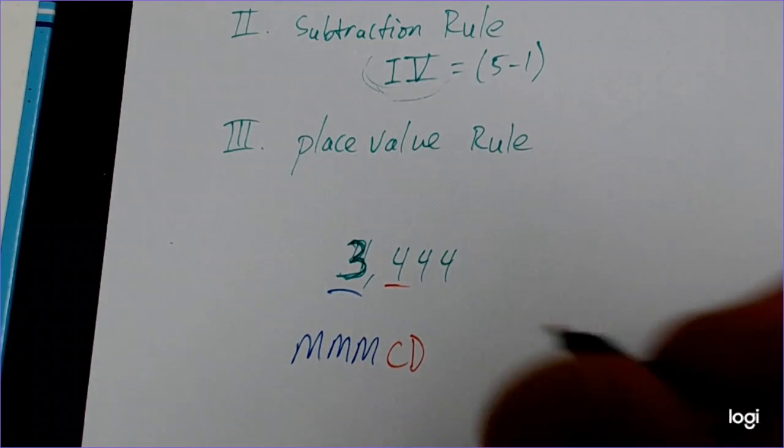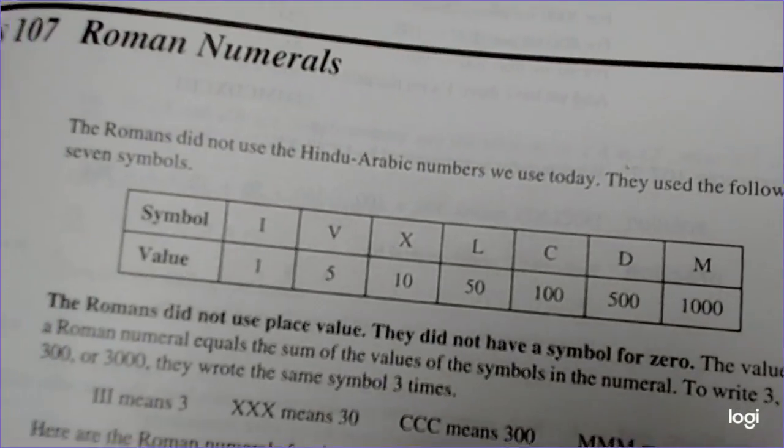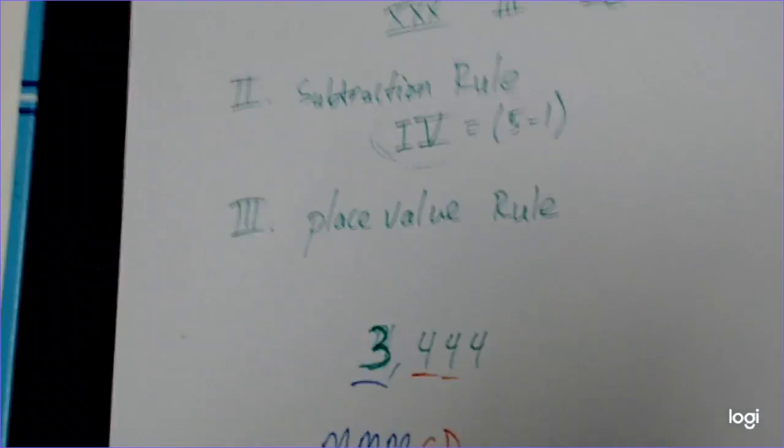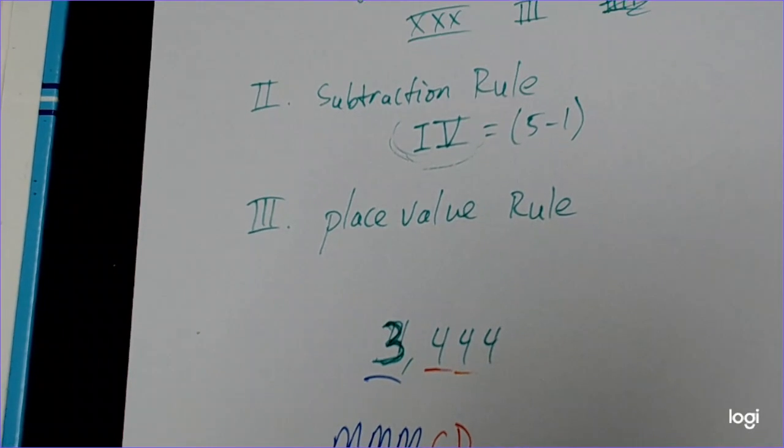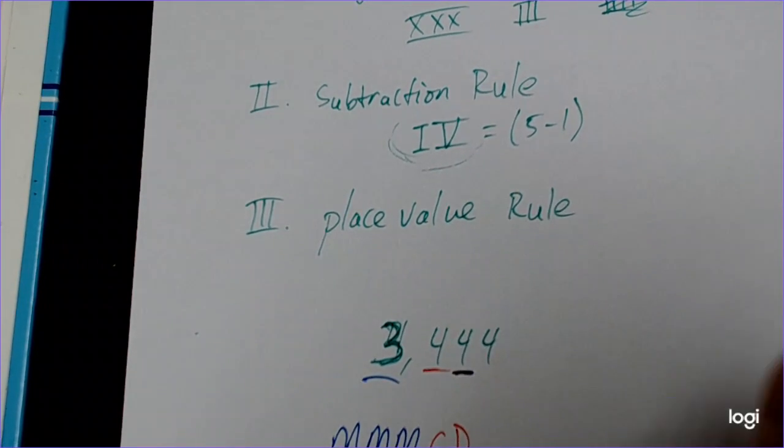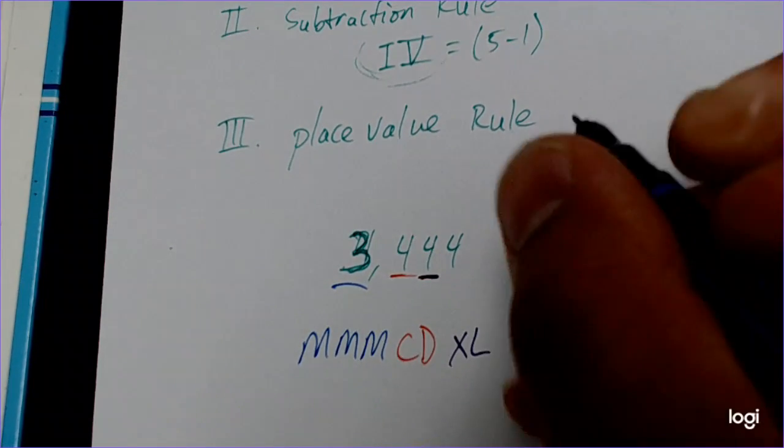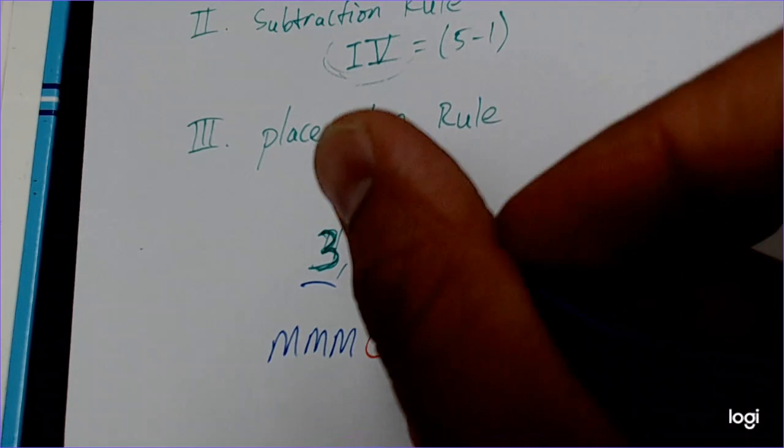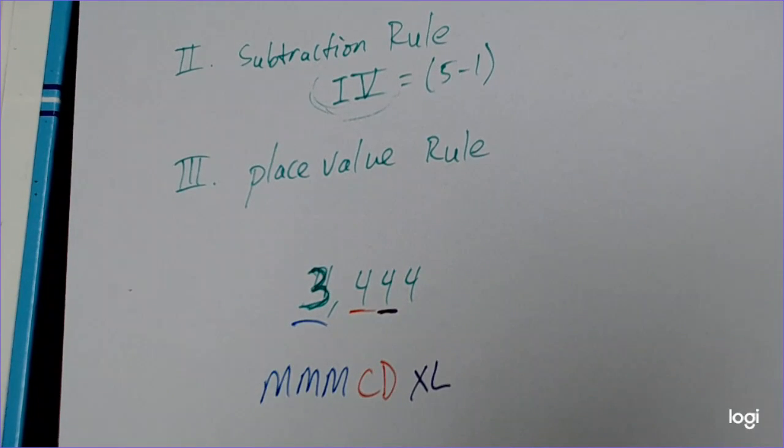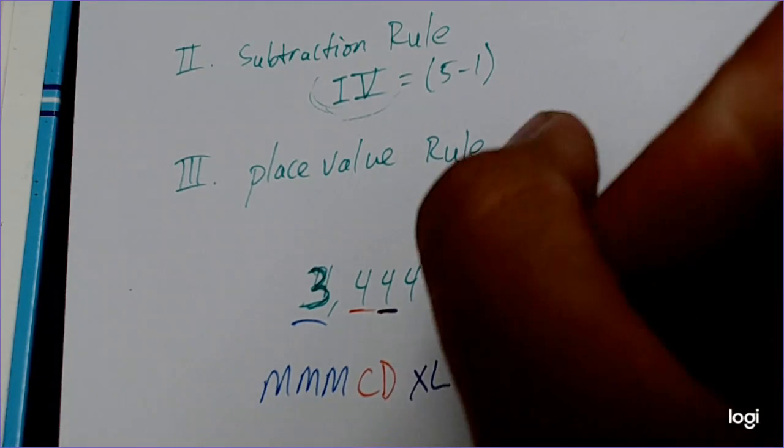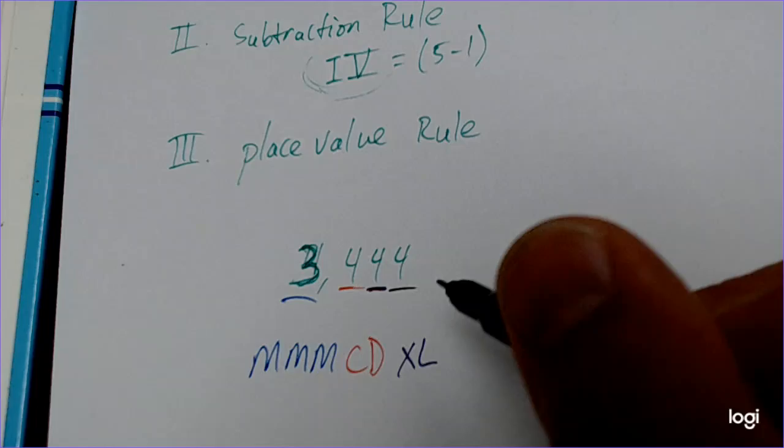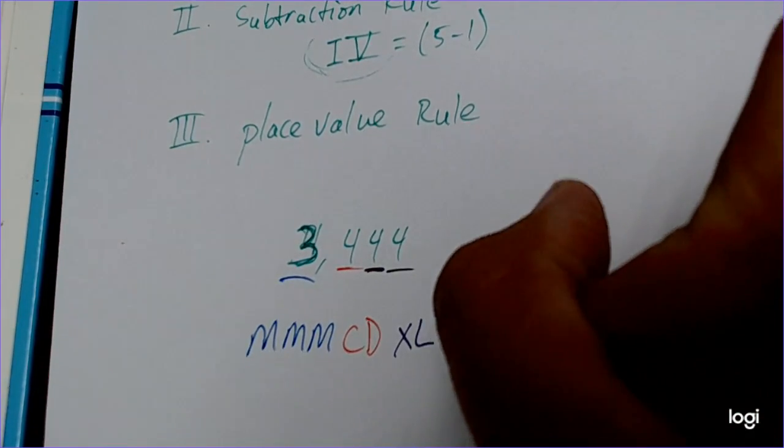Next, I'm going to go to the tens place value. How do I write the number 40? I would have to do 50 minus 10. So purple. How do I write 40? I'm going to put 10 subtracted from 50. So that's 40. And then the last one, the number 4. I'll use black for this one. So then 4, I will write IV.